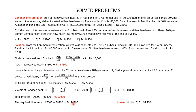So Kishan received Rs 16,800 less at the end of 3 years. The correct answer is option A, Rs 16,800.